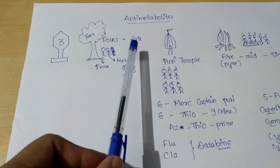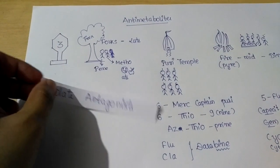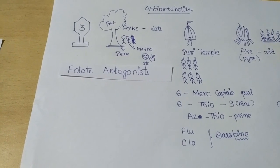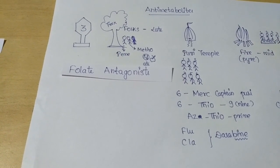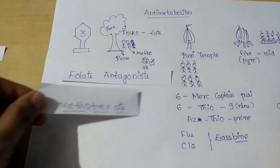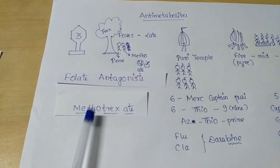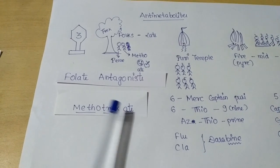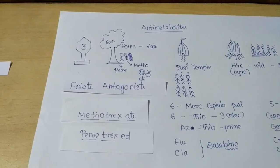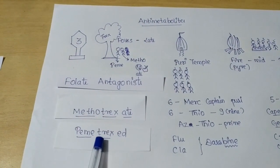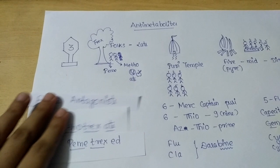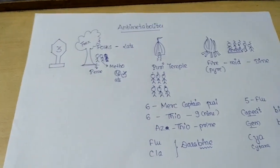Coming to the tree part, this gives us the first subclass: folate antagonists. There were two people under the tree, so there will be two drugs under this class. The first is Metho, who ate an apple under the tree — that is methotrexate. The second drug is Peme, also under the tree — pemetrexate. So this is the folate antagonist subclass.